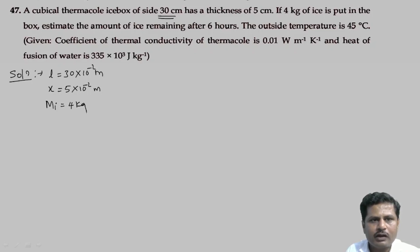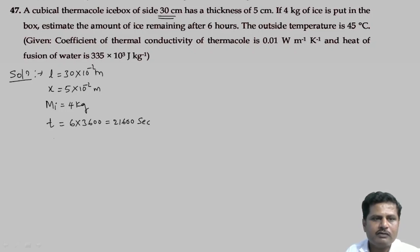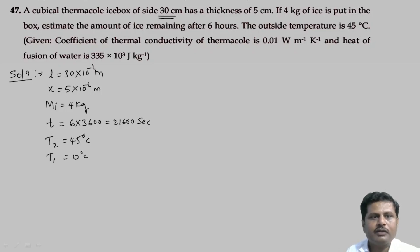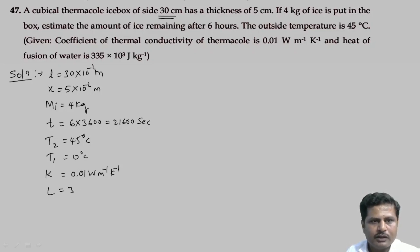Given data: side length L equals 30 centimeters equals 30 into 10 to the minus 2 meters; thickness x equals 5 centimeters equals 5 into 10 to the minus 2 meters; mass of ice equals 4 kg; time t equals 6 hours equals 21600 seconds; outside temperature T2 equals 45 degrees Celsius; temperature of ice T1 equals 0 degrees Celsius; thermal conductivity k equals 0.01 watt per meter per Kelvin; latent heat of fusion L equals 335 into 10 to the 3 Joule per kg.